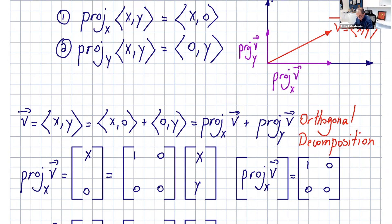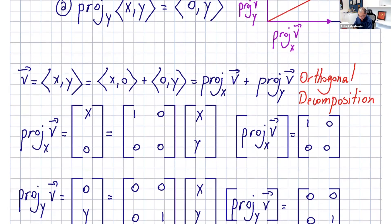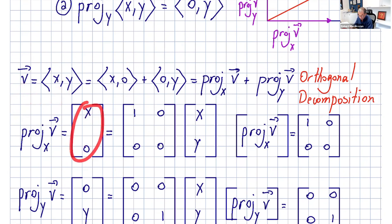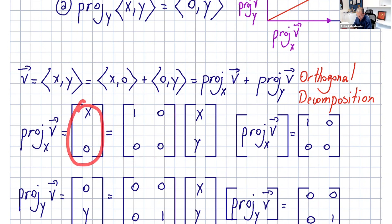We can also use matrices or linear operators to represent this by matrix multiplication. The projection of v onto x, using matrix notation, gives us (x, 0). So the matrix notation gives the same result as the vector notation. How can I get that matrix? This is the linear operator: if you take any vector and multiply it by this matrix, you get the components of its projection onto the x-axis.